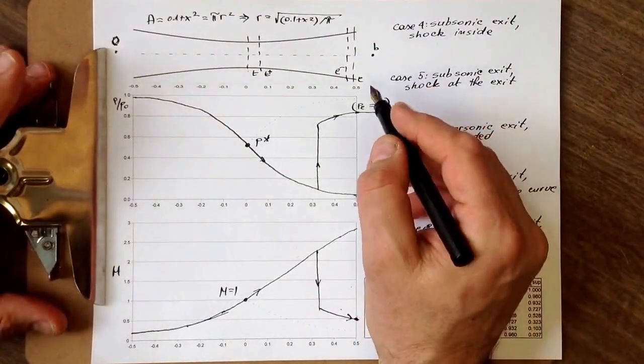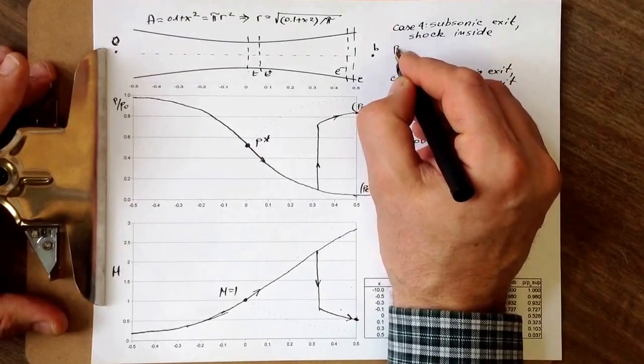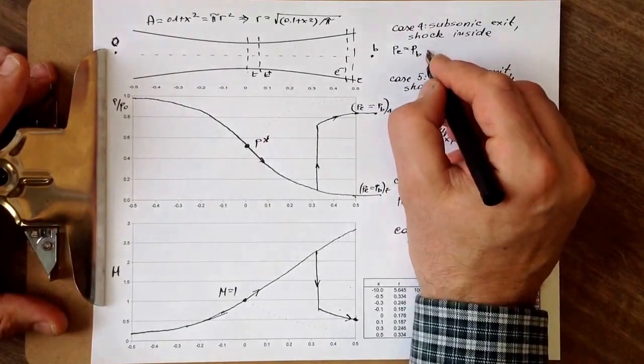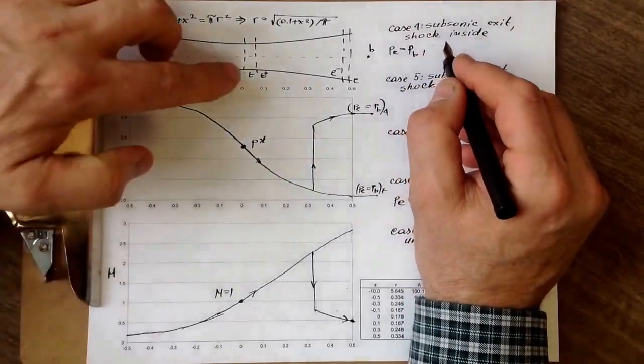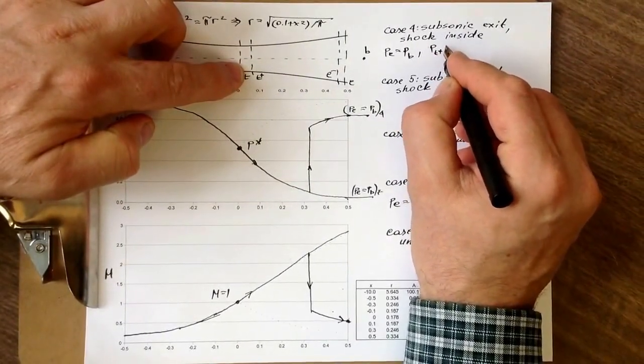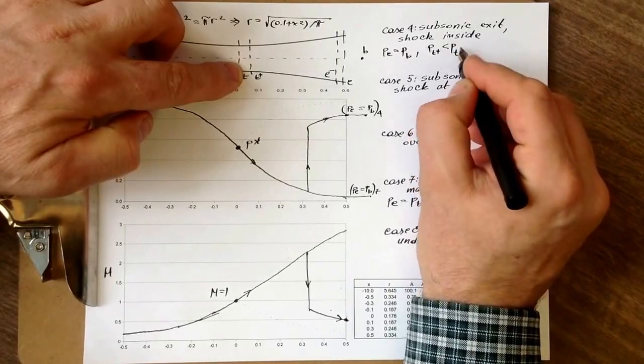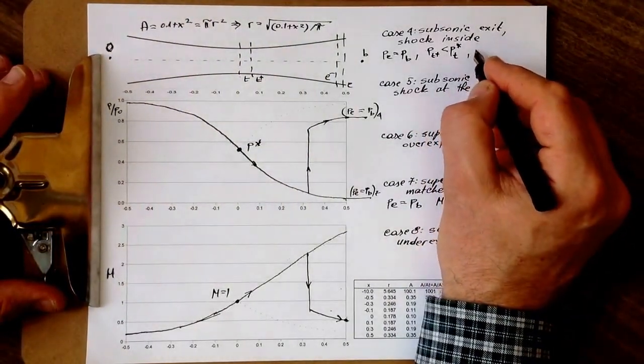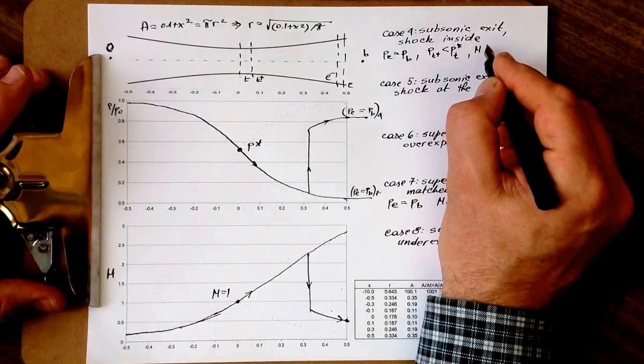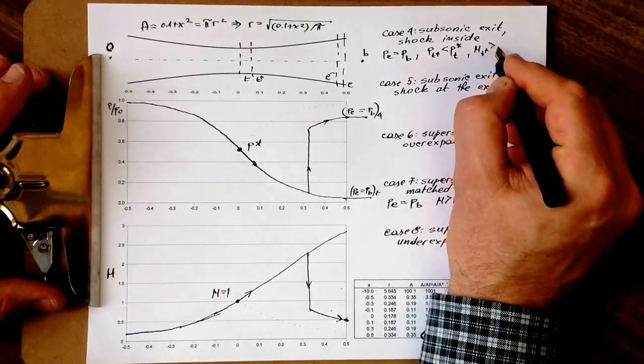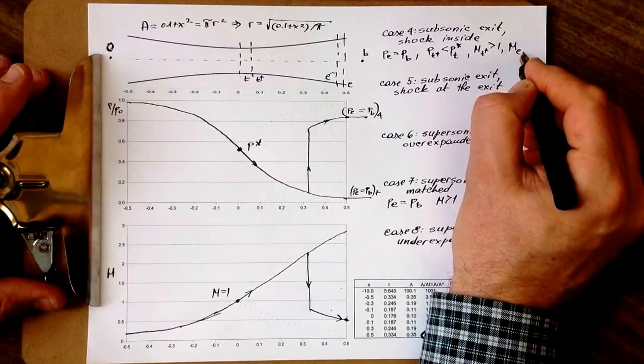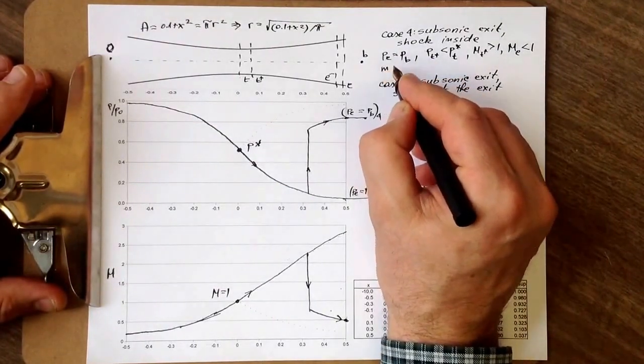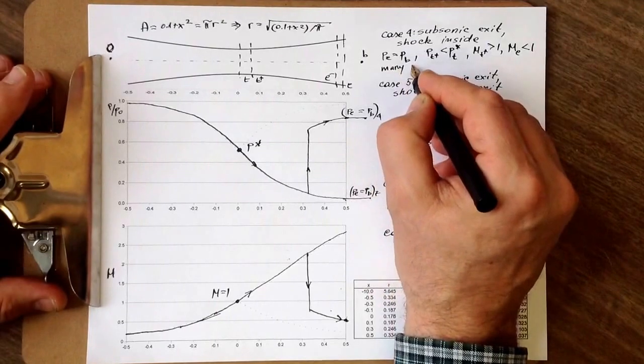So, essentially, regime 4 is such that, again, we have PE equals P4, PB. We have a situation that, what we would call here, PT+, is less than PT, or less than critical. We have acceleration that Mach, at T, after the throat, is larger than 1, but Mach exit is less than 1, it's subsonic. And it is definitely, so many solutions possible, many paths, let's call it.